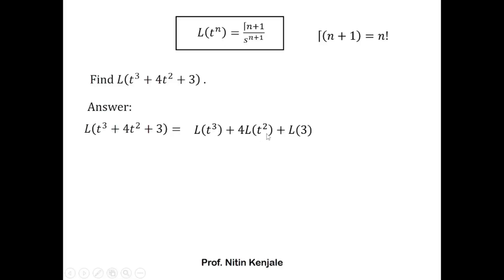Using the formula L{t^n} = Γ(n+1)/s^(n+1): for n=3, L{t³} = Γ(4)/s⁴; and L{t²} = Γ(3)/s³. For the constant term, L{3} equals 3·L{1}. We treat 1 as t raised to 0, so L{1} = Γ(1)/s¹. Since Γ(1) equals 1, this gives 3 times 1 over s, which is 3/s.